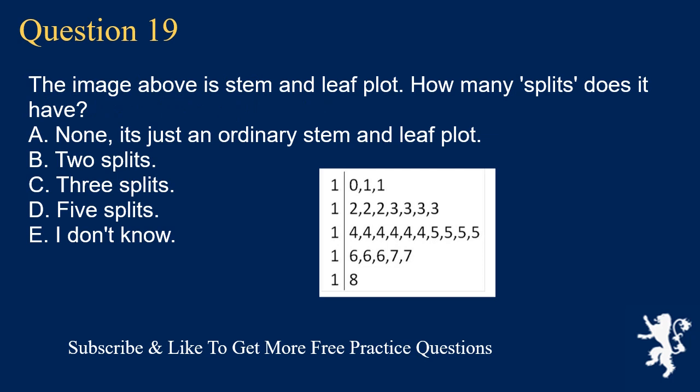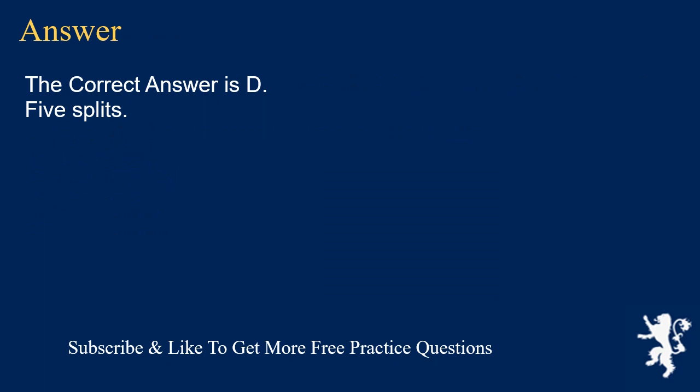Question 19: The image above is a stem and leaf plot. How many splits does it have? A. None — it's just an ordinary stem and leaf plot, B. 2 splits, C. 3 splits, D. 5 splits, E. I don't know. The correct answer is D, 5 splits.